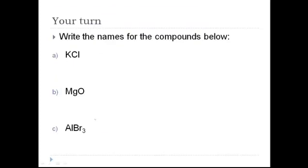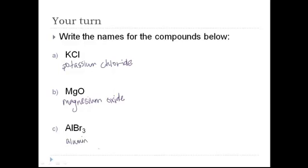All right, it's your turn. Hit pause and come back when you're done. Here are your answers. K is potassium, and chlorine turns into chloride. Mg is magnesium, and oxygen turns into oxide. And last one, Al is aluminum. And even though there are three bromines here, don't say "tri bromide" — that's for covalent compounds. We're just going to turn bromine into bromide.